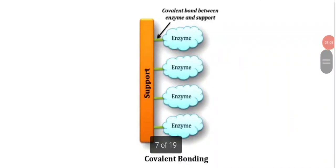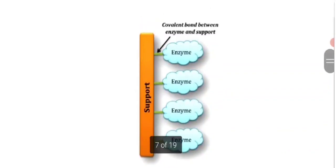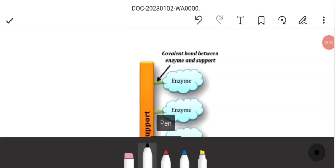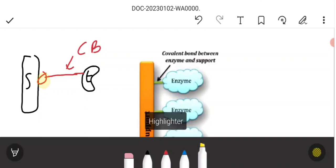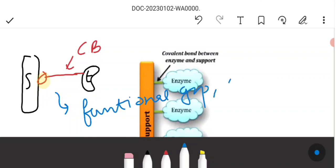Next is covalent bonding. Covalent bond is a strong bond. The enzyme is attached through functional groups present in the enzyme molecule, and it will attach to the support surface through covalent bond.